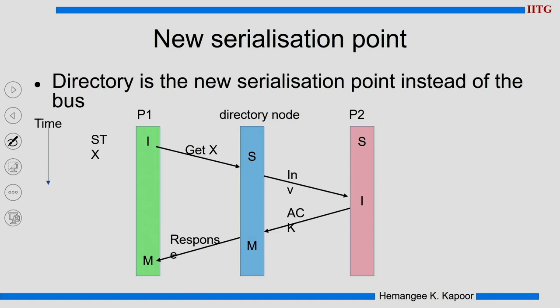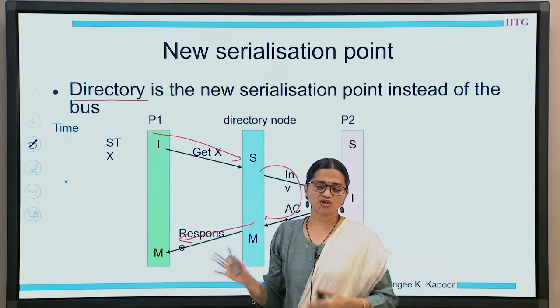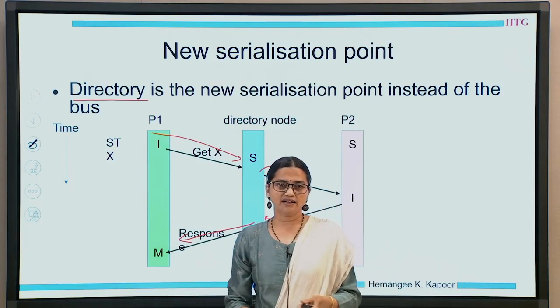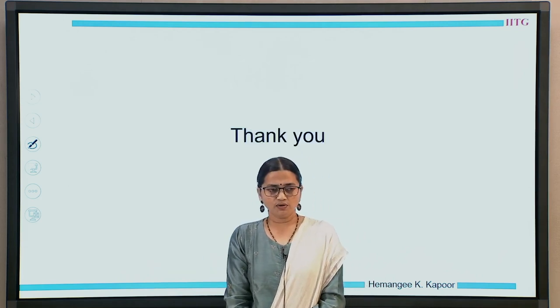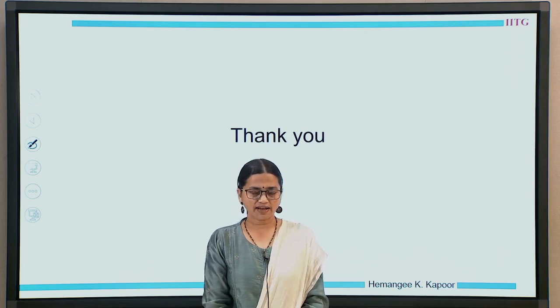With this idea, the serializing point — which was the bus in the snooping-based protocol — is now the directory. All processors first go to the directory, the directory takes appropriate action and then replies. The order in which requests reach the directory determines the serialization order. So from the bus as a serializing point, we have moved to the directory as a serializing point. That was an overview of directories; we will do more details in future lectures. Thank you.